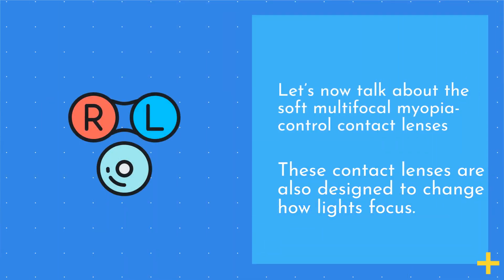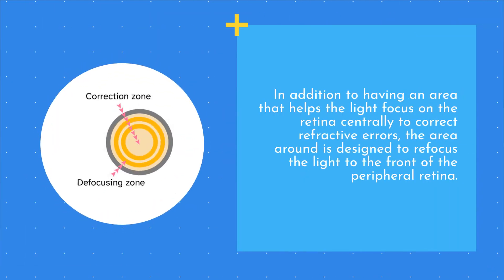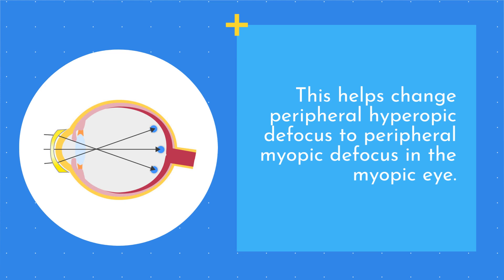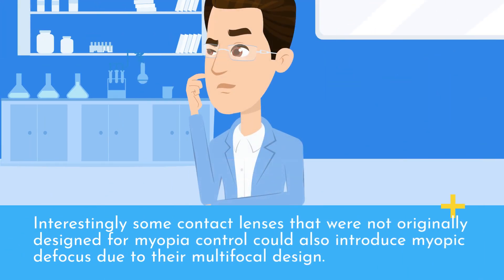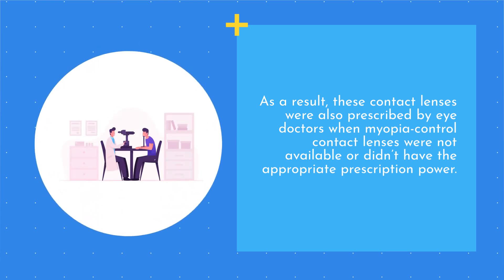Let's now talk about the soft multifocal myopia control contact lenses. These contact lenses are also designed to change how light focuses. In addition to having an area that helps the light focus on the retina centrally to correct refractive errors, the area around is designed to refocus the light to the front of the peripheral retina. This helps change peripheral hyperopic defocus to peripheral myopic defocus in the myopic eye. Interestingly, some contact lenses not originally designed for myopia control could also introduce myopic defocus due to their multifocal design, and were prescribed by eye doctors when myopia control contact lenses were not available or didn't have the appropriate prescription power.